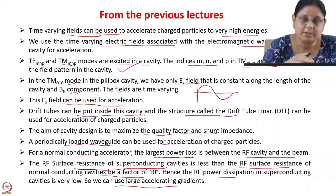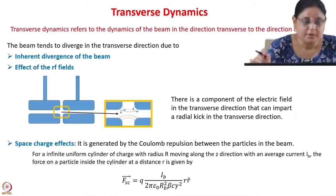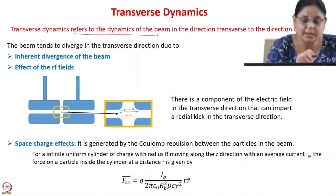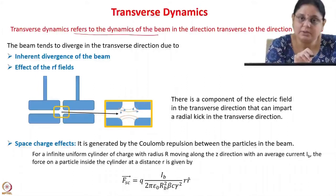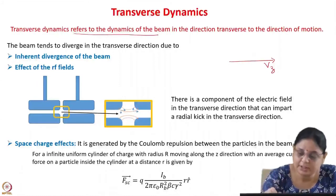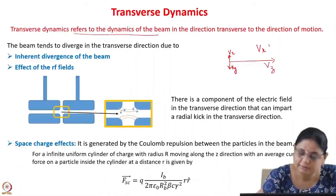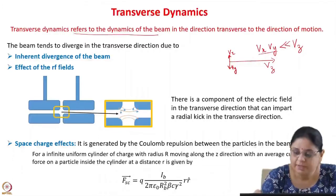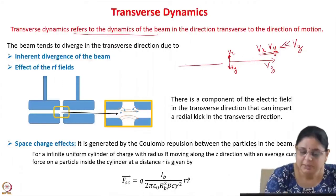Now, having learned about the various methods of acceleration in a linear accelerator, today let us learn about the transverse dynamics of particles. Transverse dynamics refers to the dynamics of the beam in the direction transverse to the direction of motion. We have the particle moving in the z direction, and the particles have some thermal velocity in the x and y directions. To qualify as a beam, Vx and Vy should be much smaller compared to Vz—they are very small but finite.